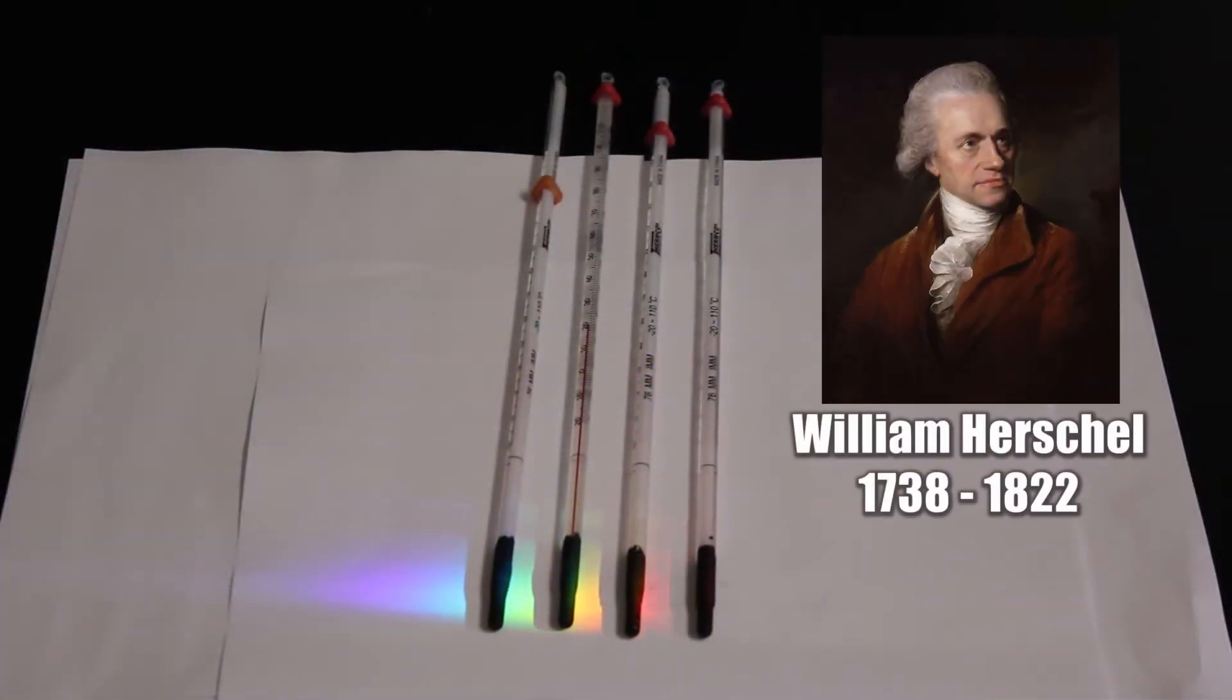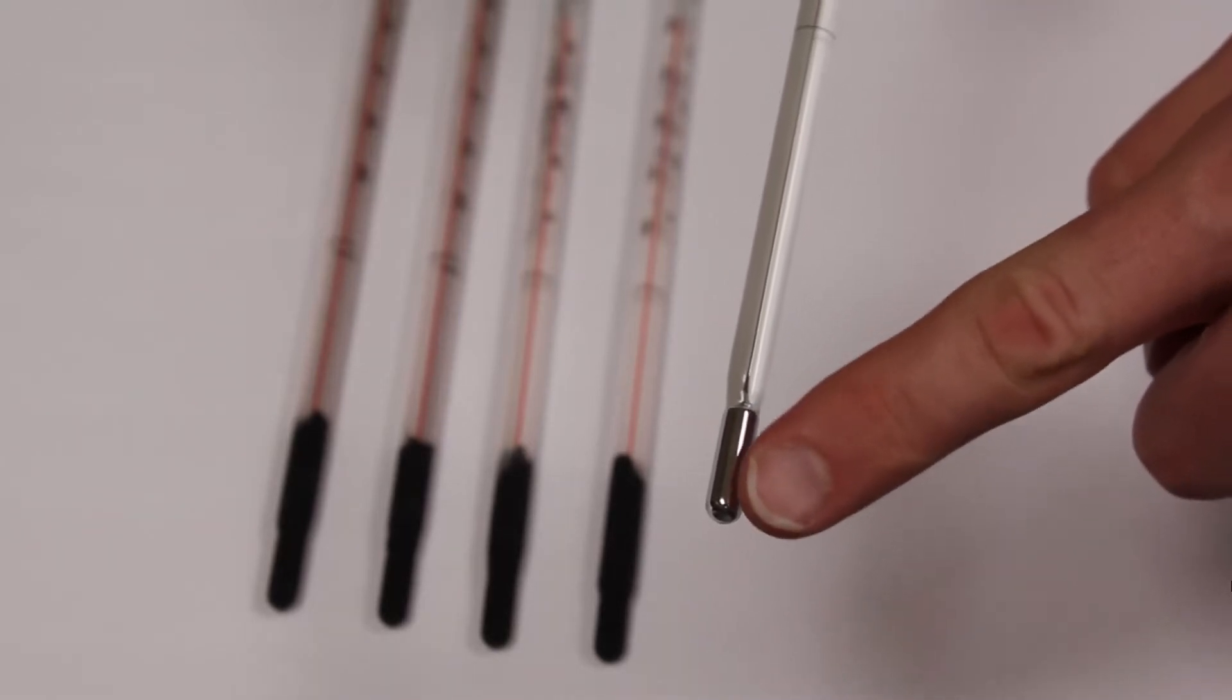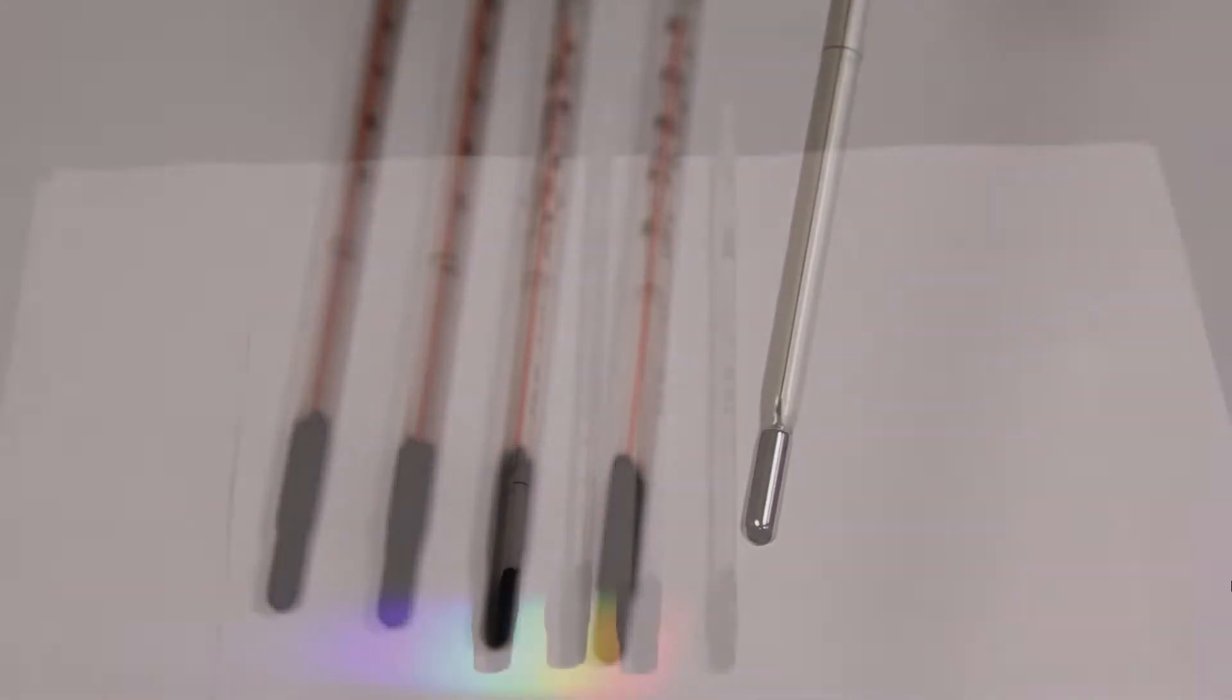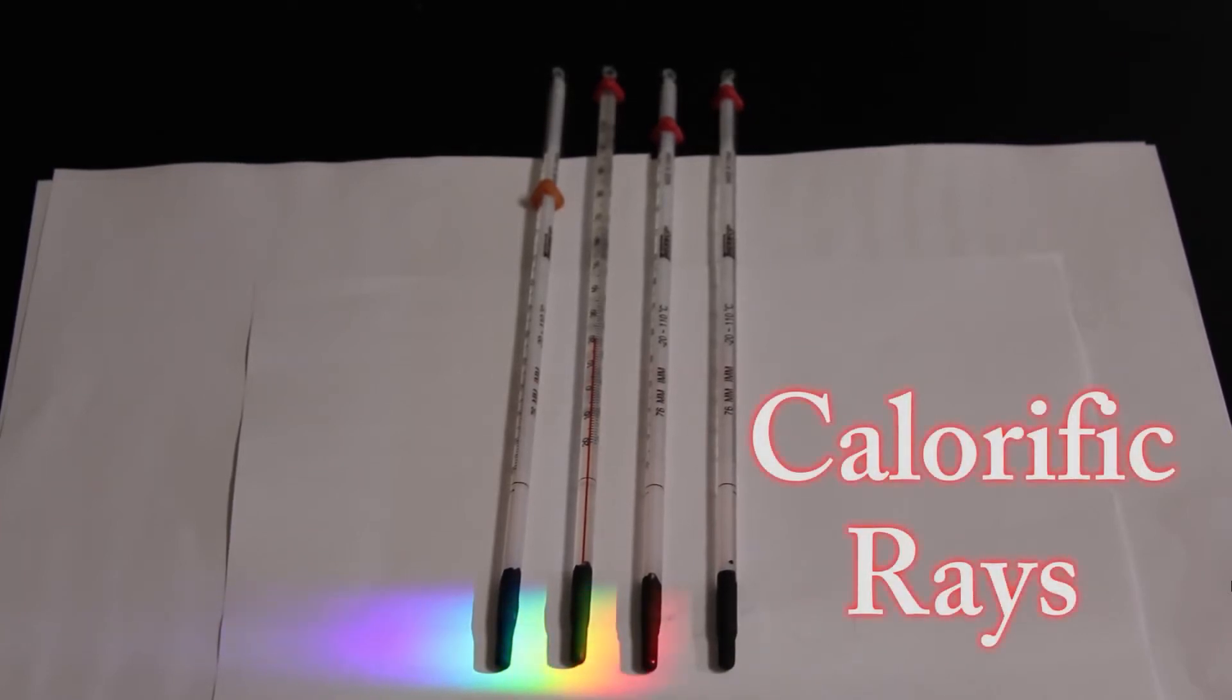Astronomer William Herschel projected the solar spectrum onto black painted thermometers to find out which color was the warmest. He was using mercury thermometers. You can imagine his surprise when the warmest color turned out to be an invisible color that he didn't even know about, beyond the red side of the spectrum, and he recognized immediately that this was a new form of invisible light, which he called calorific rays.